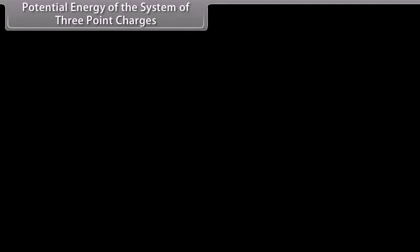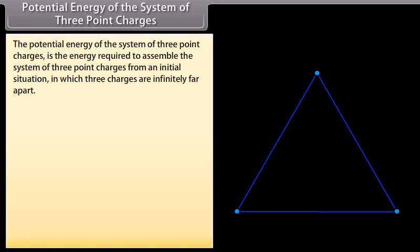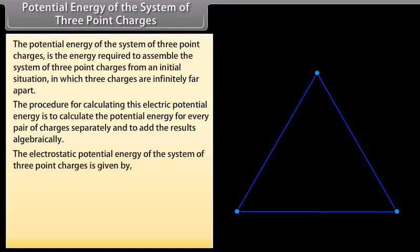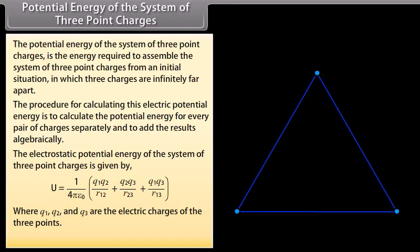Potential energy of the system of three point charges. The potential energy of a system of three point charges is the energy required to assemble the system from an initial situation in which the three charges are infinitely far apart. The procedure is to calculate the potential energy for every pair of charges separately and add the results algebraically. The electrostatic potential energy is given by U equals 1 upon 4π ε₀ multiplied by (Q1Q2 upon R12 plus Q2Q3 upon R23 plus Q1Q3 upon R13), where Q1, Q2, Q3 are the charges and R12, R13, R23 are their separation distances.